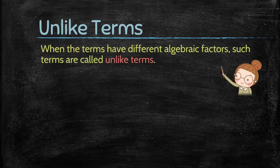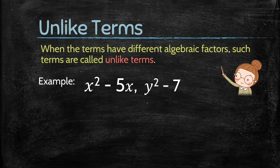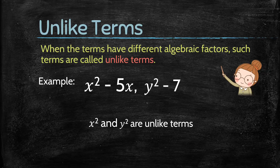Next, what are unlike terms? When the terms have different algebraic factors, such terms are called unlike terms. For example, consider x square minus 5x and y square minus 7. Here, x square and y square are unlike terms because they have different algebraic factors.